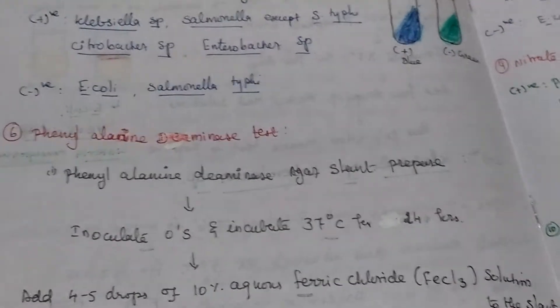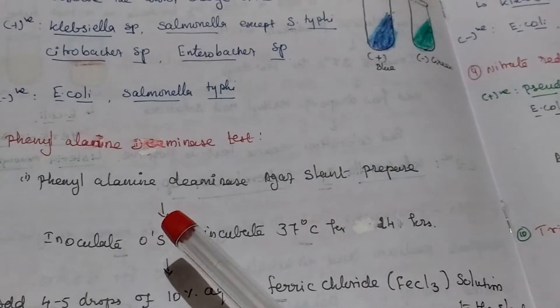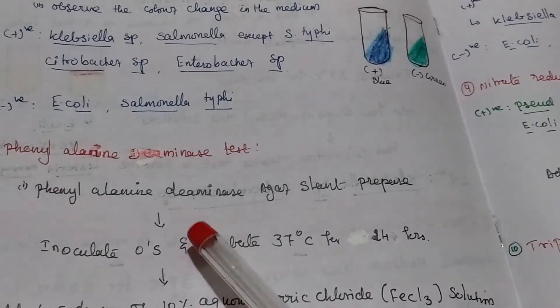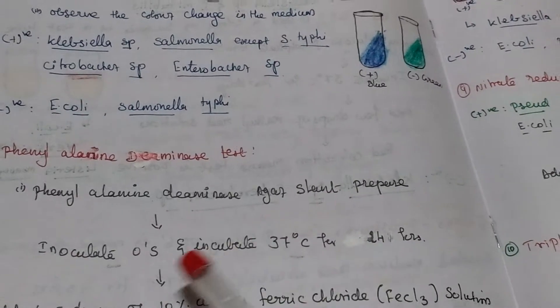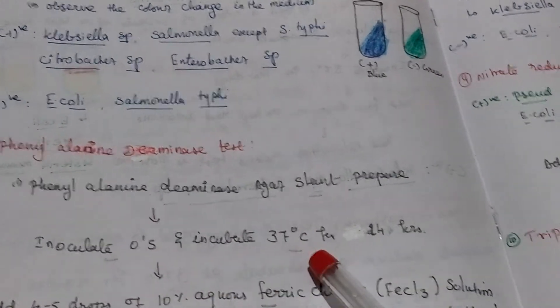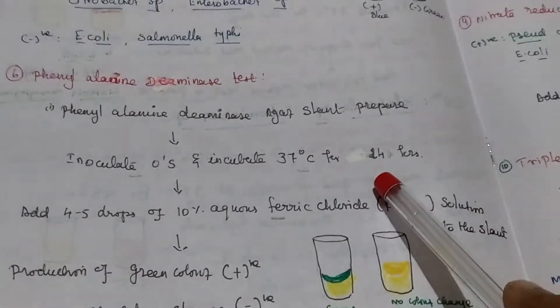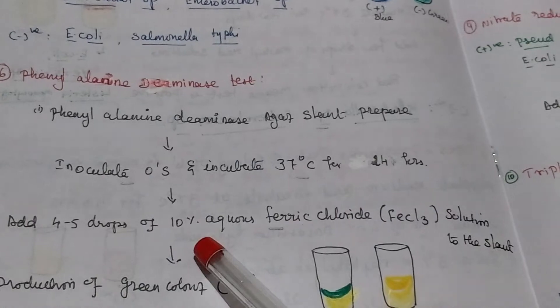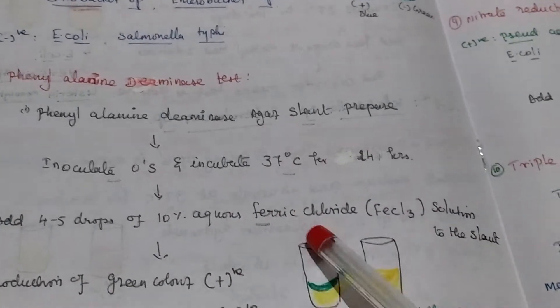Sixth one, phenylalanine deaminase agar test. Here we are preparing agar slant. Inoculated organism and incubated 37 degrees Celsius for 24 hour. Then we are adding 4 to 5 drops of 10% aqueous ferric chloride solution.